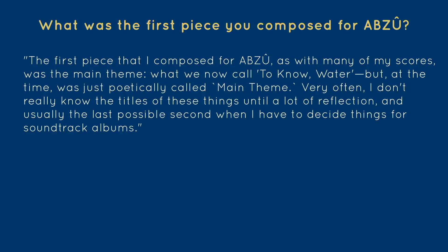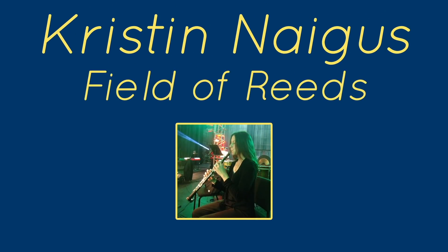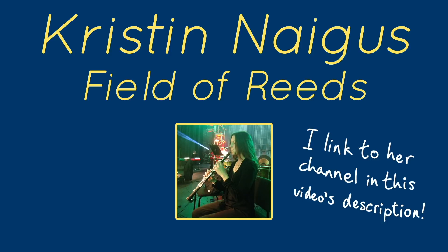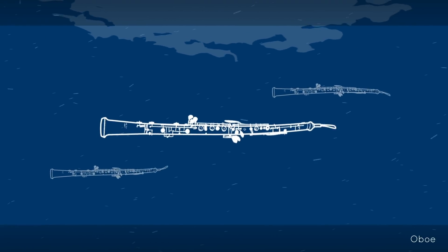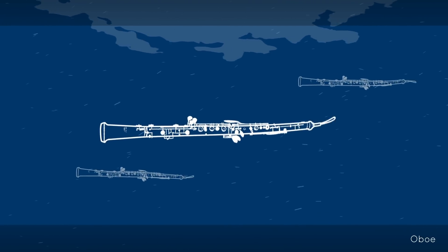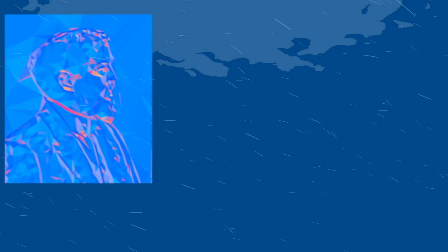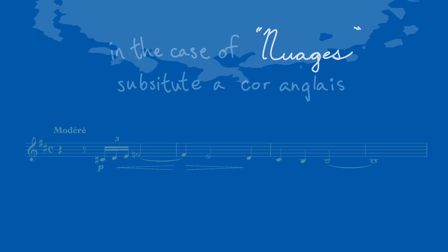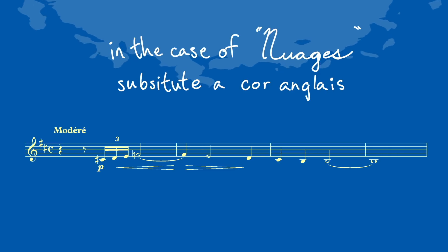Very often I don't really know the titles of these things until the last possible second when I have to decide for soundtrack albums. In selecting an instrument to play these melodies, Austin found Kristin Negus and her channel Field of Reeds, on which she performed a cover of one of his compositions for Journey on oboe — earning her a leading role in Abzu's soundtrack. The oboe is a leading instrument; its waveform can cut through an ocean of orchestral sound, which is one reason it's the chosen instrument to tune everyone else in an orchestra. This may have been inspired by Claude Debussy, who in works like La Mer had the oboe cut above the rest of the orchestra.